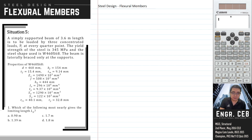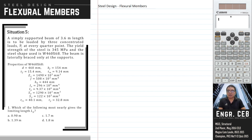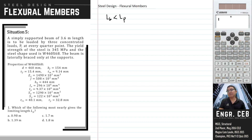These are the properties of the wide-flange beam. For the first question, which of the following most nearly gives the limiting length Lp? This is the limiting length for the limit state of the wide-flange beam. We have a criteria that if the unbraced length of the beam is less than Lp, lateral torsional buckling will then apply. Lp is used to determine what kind of lateral torsional buckling will govern.